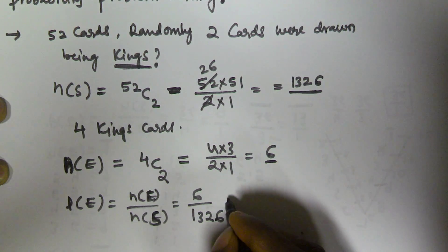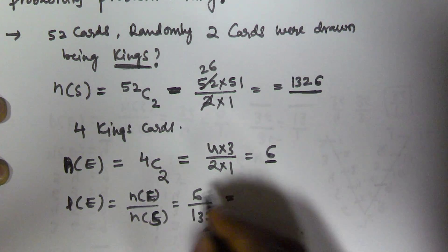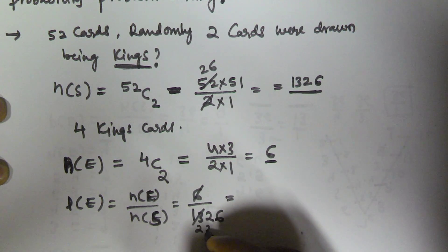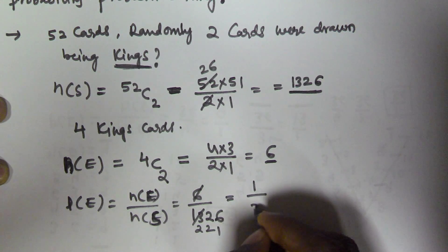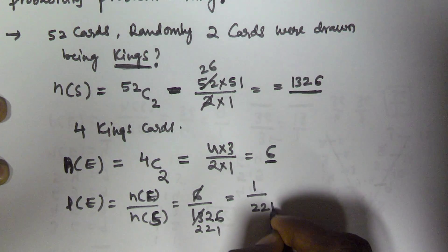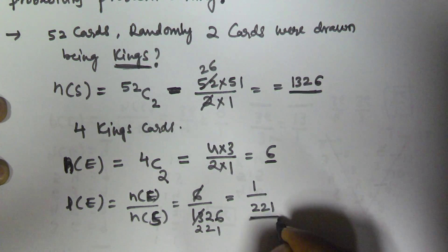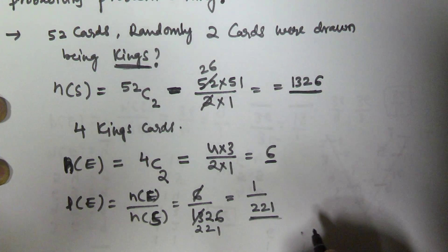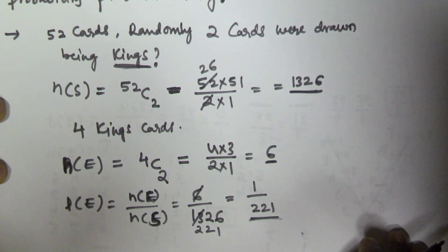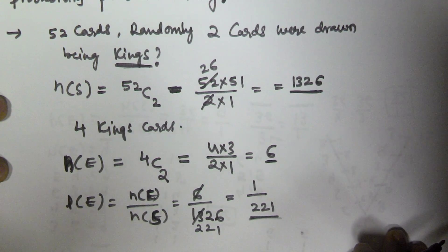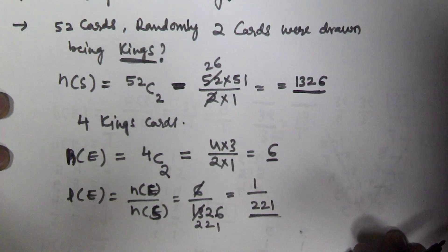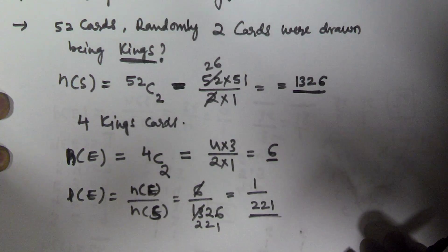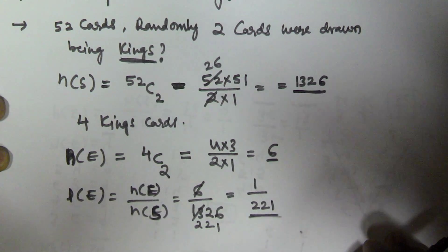So that is going to be 6 by 1326, which simplifies to 1 by 221. So this is the probability of selecting 2 kings from the pack of 52 cards.